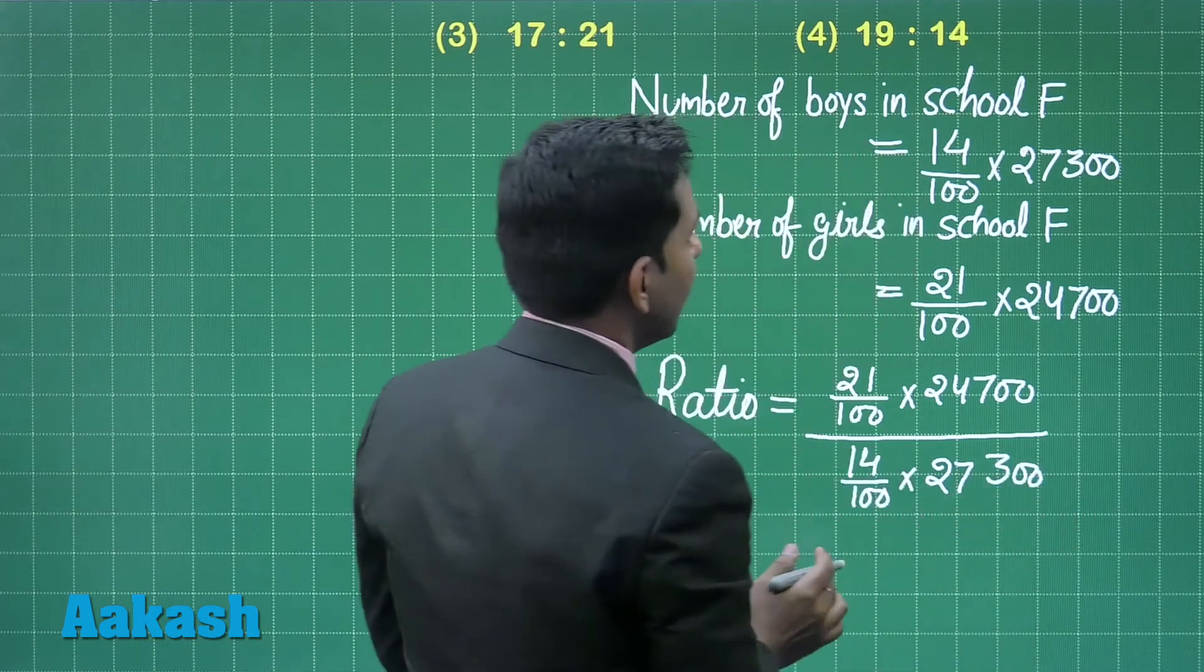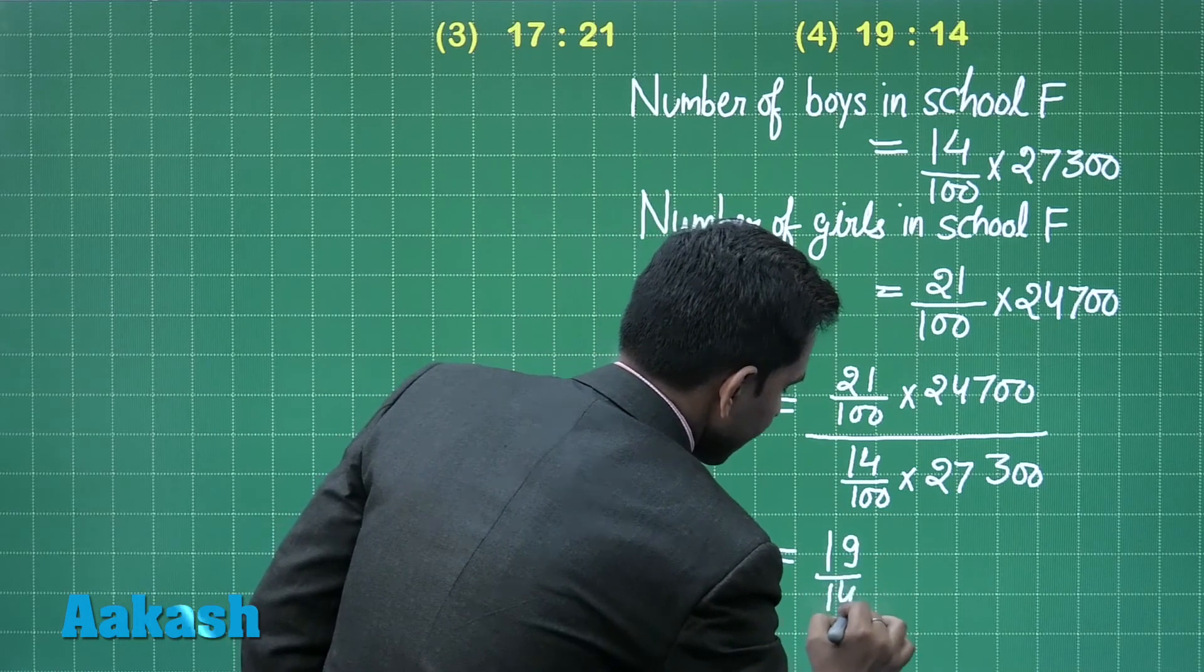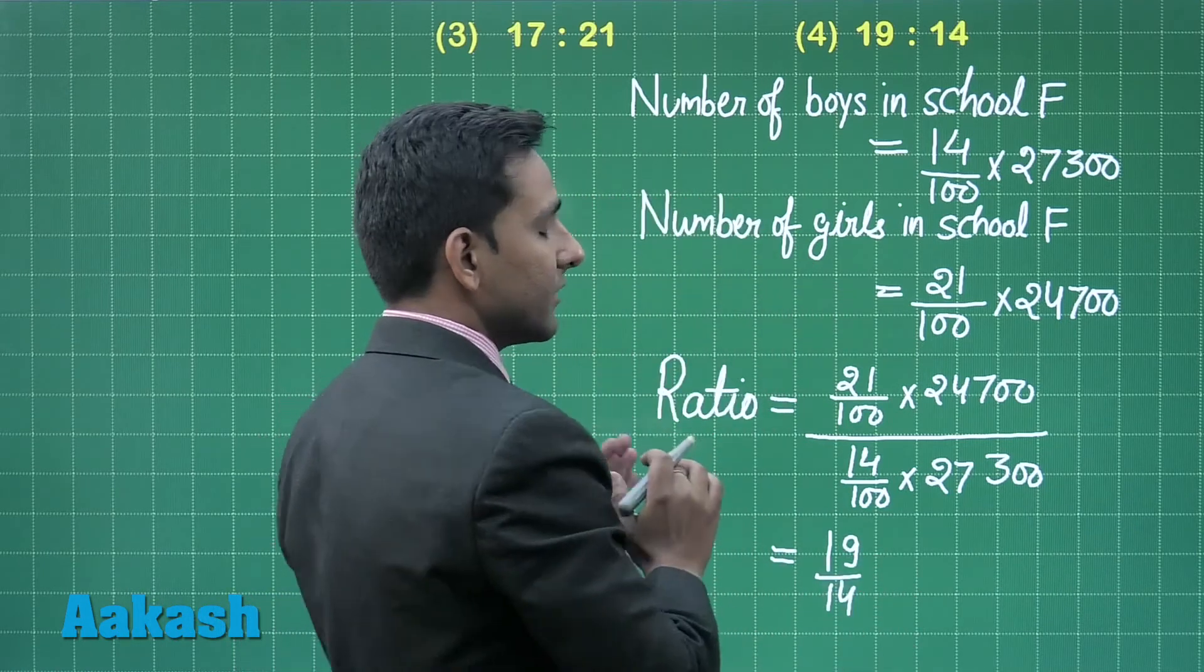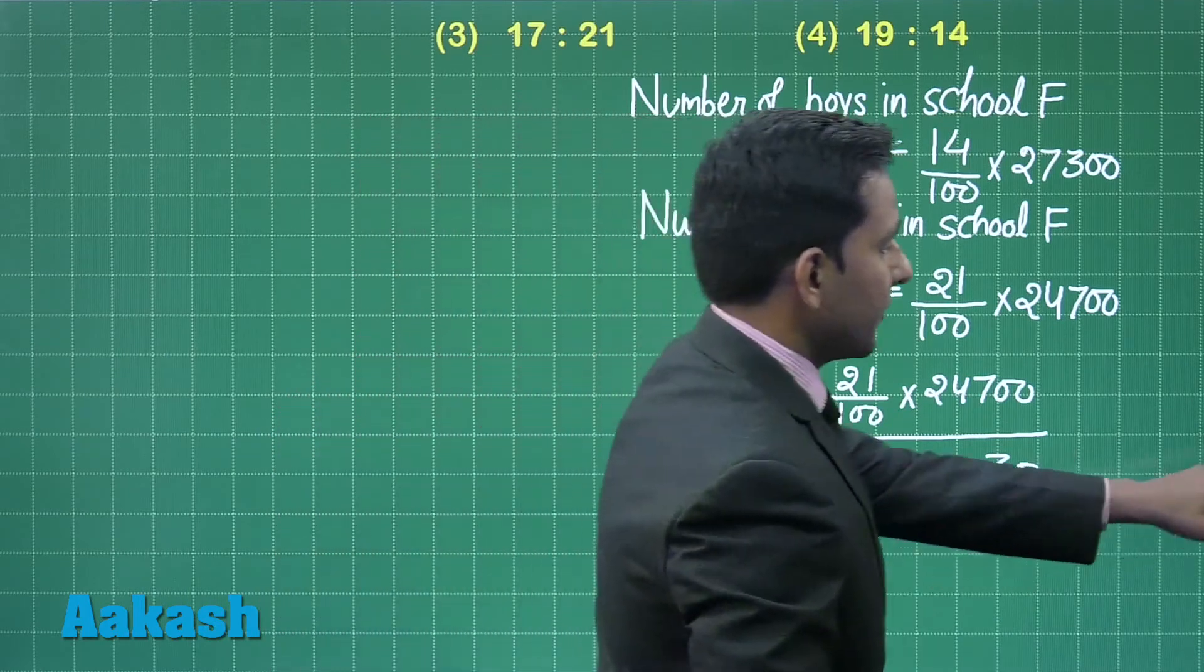When we simplify this expression, we obtain 19 divided by 14. That means the ratio of the number of girls to the number of boys in school F is 19:14.